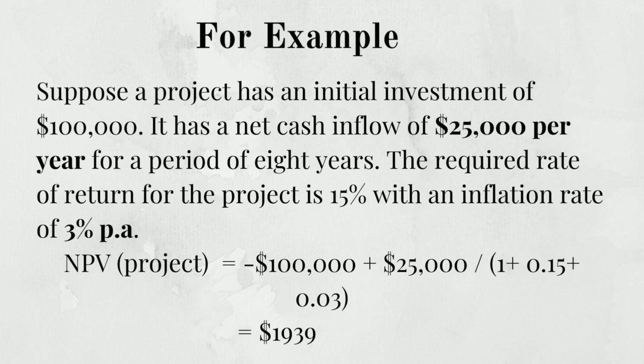The required rate of return for the project is 15% with an inflation rate of 3% per annum. NPV of project equals negative $100,000 plus $25,000 divided by (1 plus 0.15 plus 0.03), which equals $1,939.